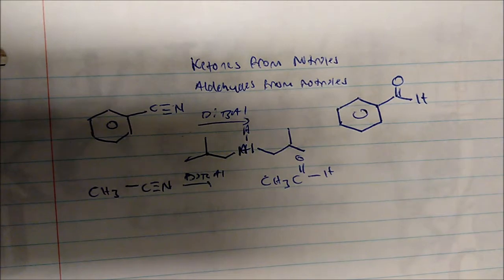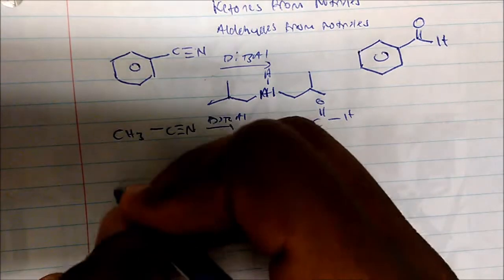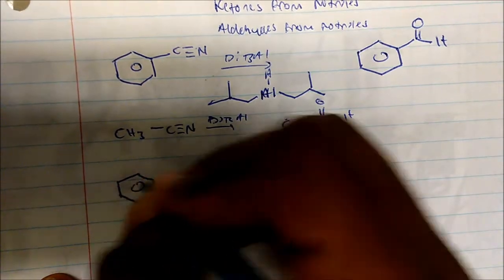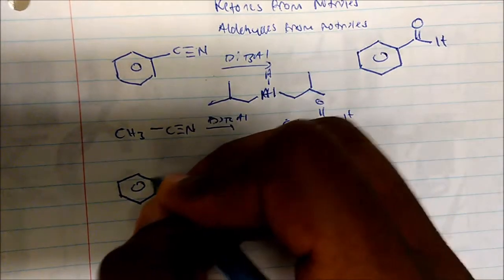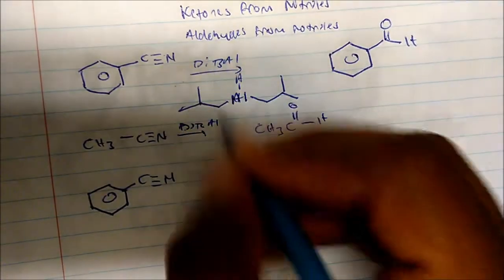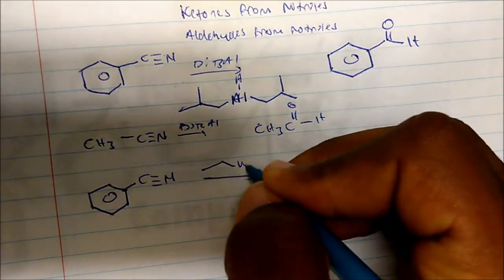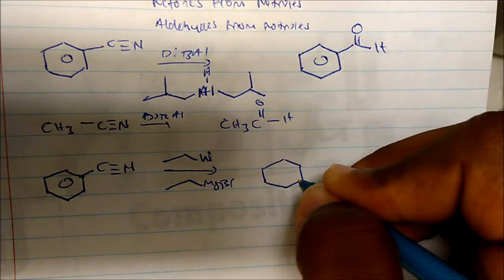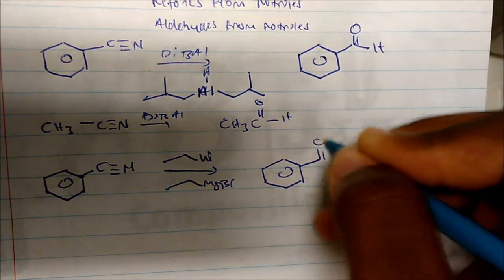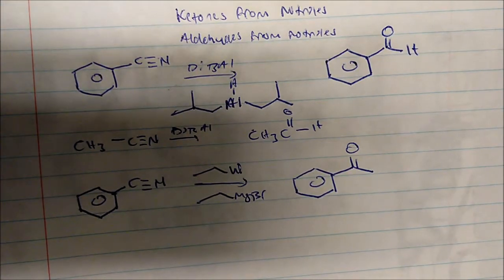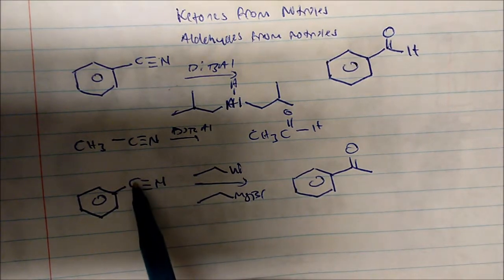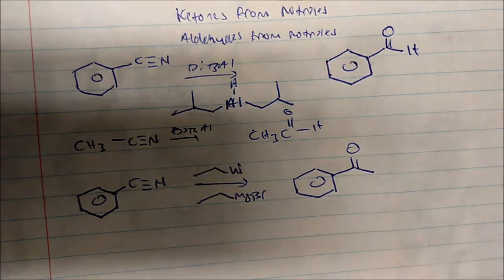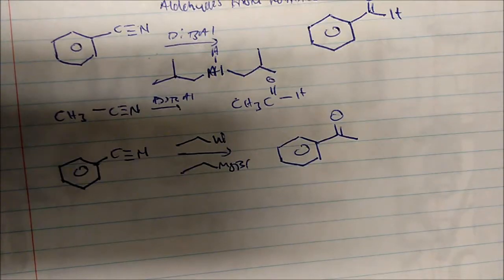Now for ketones: if I take benzonitrile — just using that as an example — and add any organolithium chemistry or any Grignard chemistry, I'll create the ketone. Notice that I'm actually adding a carbon, and my ketone is on the nitrile carbon — the carbonyl is on the nitrile carbon.